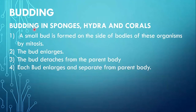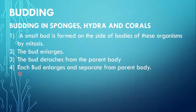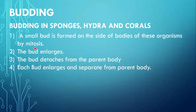Next, let's look at budding in sponges, hydra and corals. In sponges, hydra and corals, budding also takes place in 4 steps. Number 1: a small bud is formed on the side of the bodies of these organisms by mitosis.